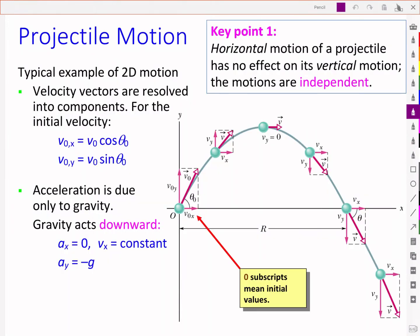This is a schematic of the projectile motion. The velocities here are resolved into vector components in the X and Y direction. We have acceleration due to gravity acting downward. Therefore, there is no acceleration in the X direction and VX remains constant throughout.